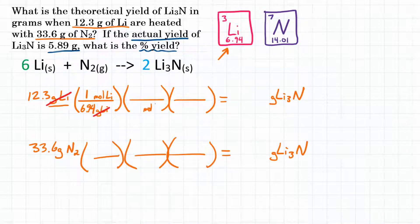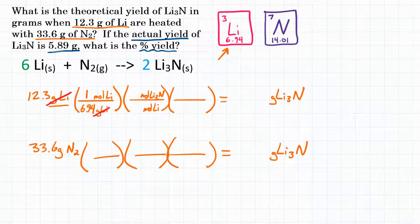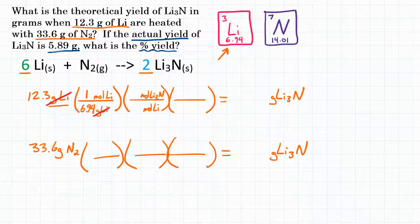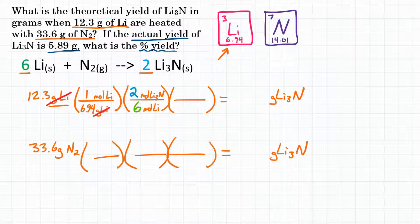We want to turn moles of lithium into moles of Li₃N, our product. For the second conversion factor, we use the mole ratios from the coefficients. For every 6 moles of lithium, we produce 2 moles of lithium nitride. So the bottom of our second conversion factor is 6 (the coefficient of lithium) and the top is 2 (the coefficient of lithium nitride). Moles of lithium cancel, giving us moles of lithium nitride.